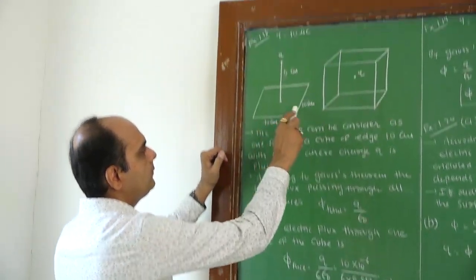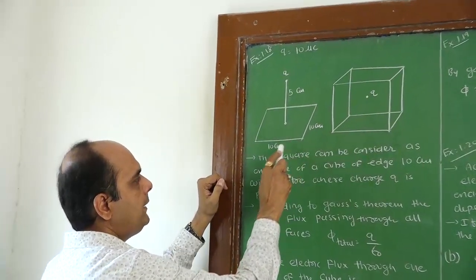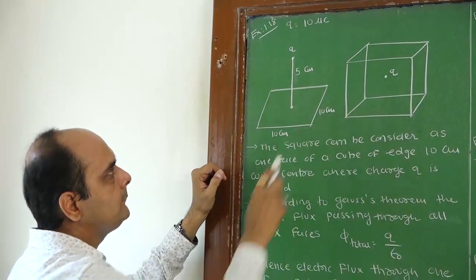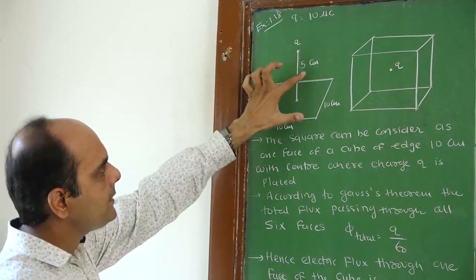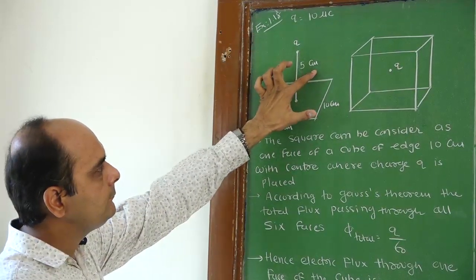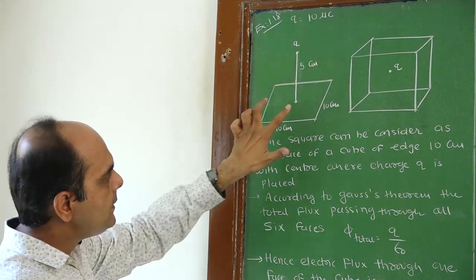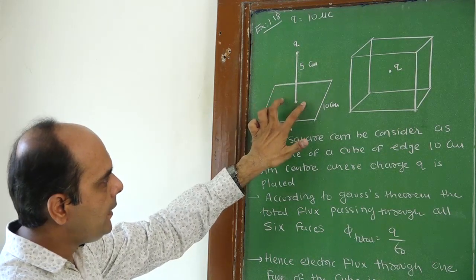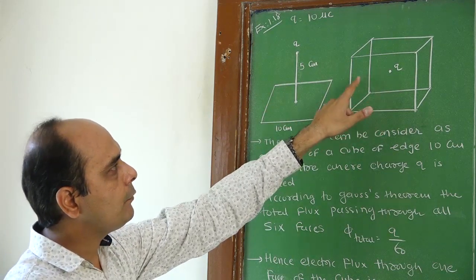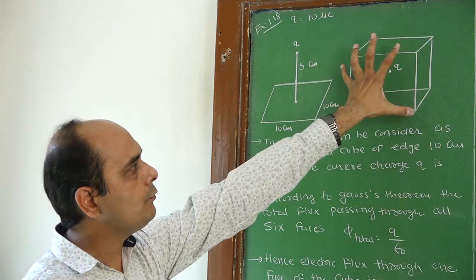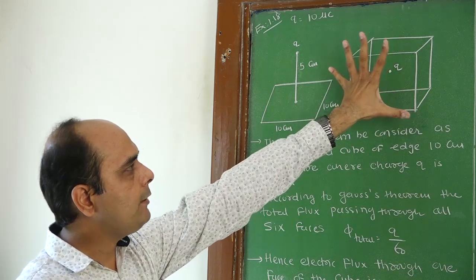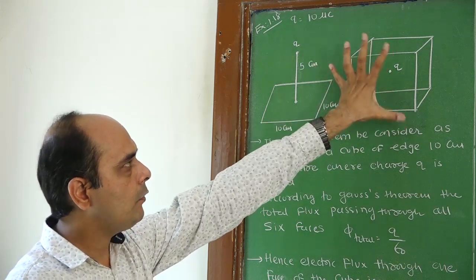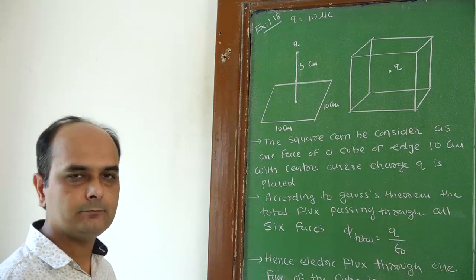This is our plane. The length is 10 cm by 10 cm. The charge q is directly above the plane at 5 cm. This is the plane, or this is one face of the cube. Now draw a complete cube and calculate the total flux. Total flux of this cube is q by epsilon 0.